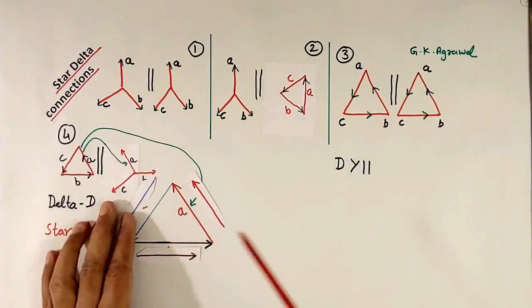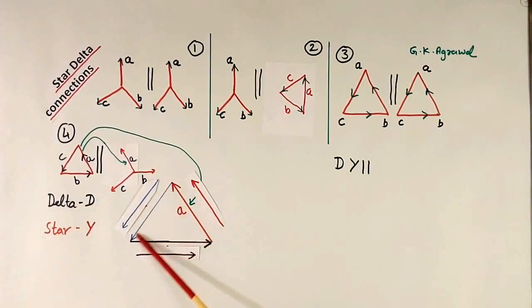And phase C. This is phase C primary. Primary connecting delta. And this is phase C of secondary. We are free to connect secondary the way we want. But phase will not change.